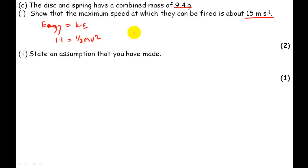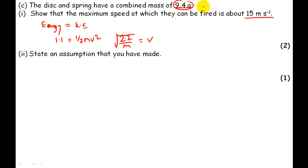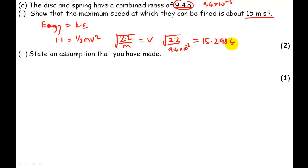Rearranging: multiply both sides by 2 to get 2.2, divide both sides by mass, giving v² = 2.2 / m. Taking the square root: v = √(2.2 / m). The mass is 9.4 grams, which is 9.4 × 10⁻³ kg. Substituting: √(2.2 / 9.4 × 10⁻³) = 15.2984, which rounds to 15.3 meters per second.